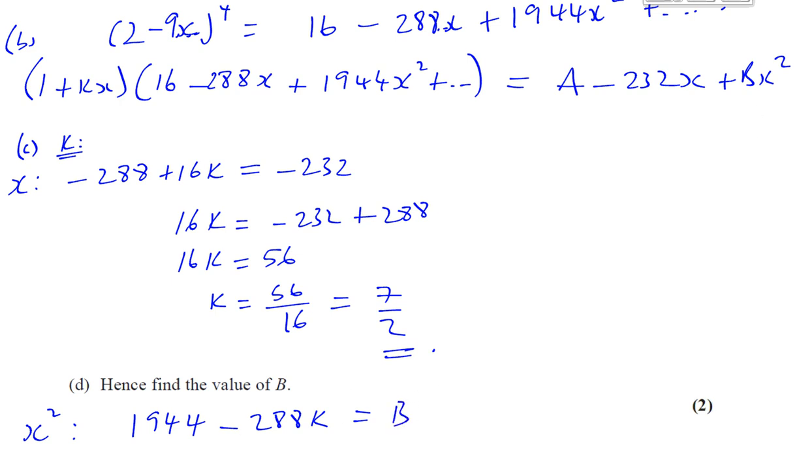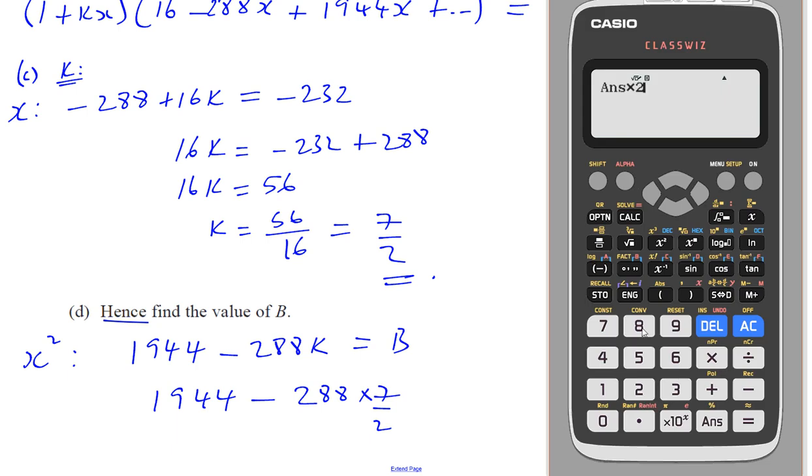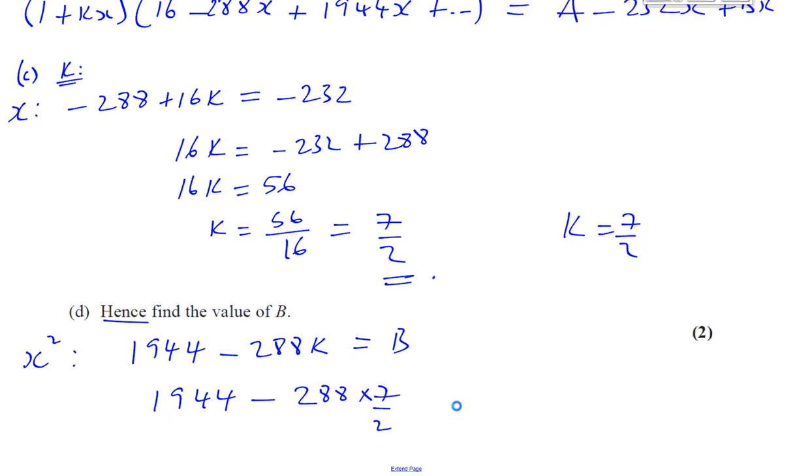So if I work out what this is, I've found what b is. And now, the reason why it says hence means using what you just did. Well, we just found what k is. We just found k is equal to 7 over 2. So we can use that value and replace that 288 by, or replace the k here by 7 over 2. So we have 1,944 minus 288 times 7 over 2. So we can just plug that into our calculator. We're going to multiply that by 288. I'm going to have 1,944. Take away the answer, which gives us 936. So we can say that b is equal to 936. So b equals 936. So there's the answer for c and there for d.